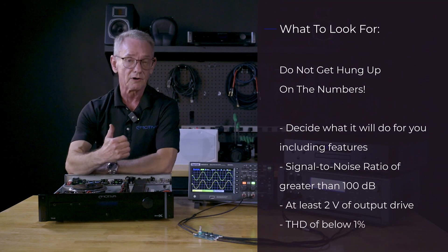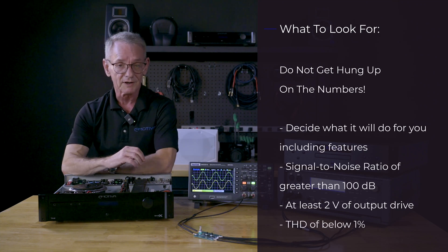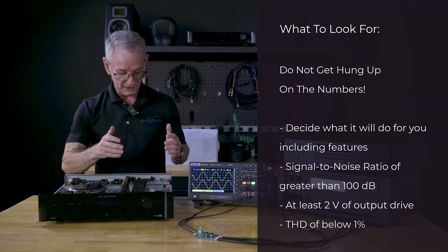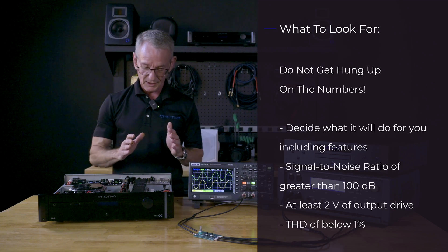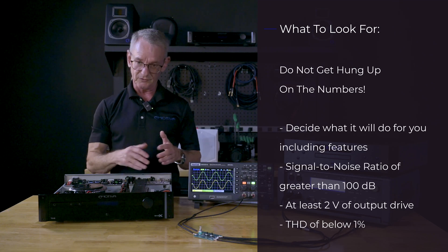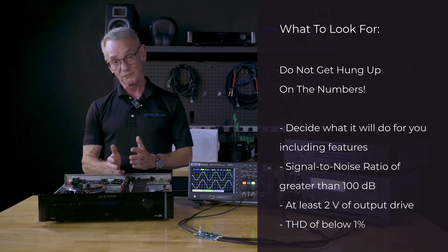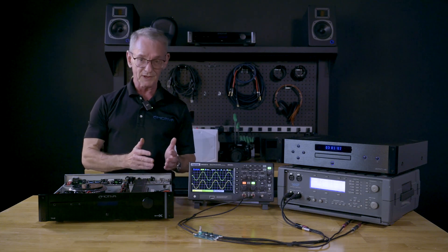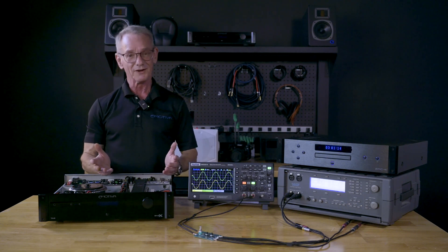What do you want to look for in a preamp? You really want to look for a preamp that has a signal-to-noise ratio greater than 100 dB. You want at least two volts of output drive or more. You want a THD of well below one percent. Don't get hung up on the numbers though — too many people do. Is it 0.01 versus 0.001 THD? The truth is it doesn't matter; you can't hear it when it's below one percent. A preamp with 105 dB of signal-to-noise versus 115 dB — again, you're not going to hear it.